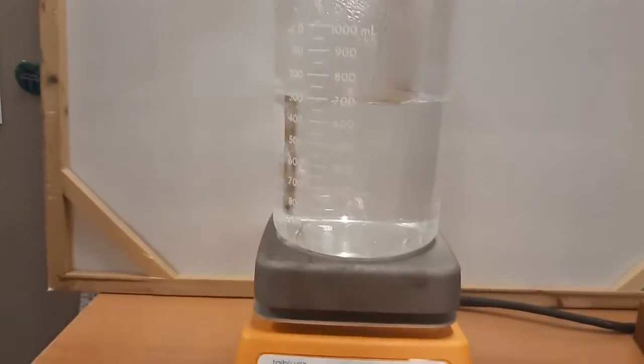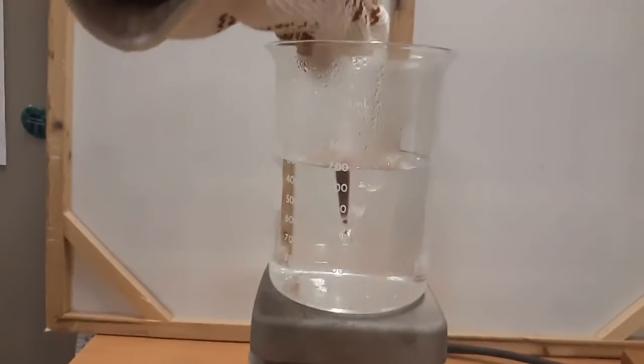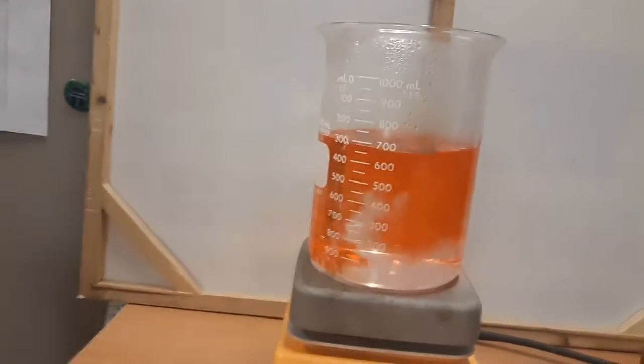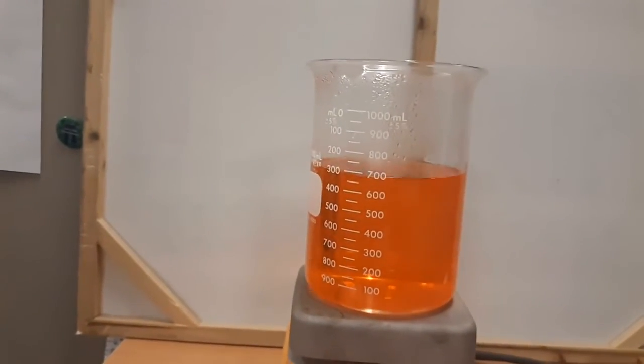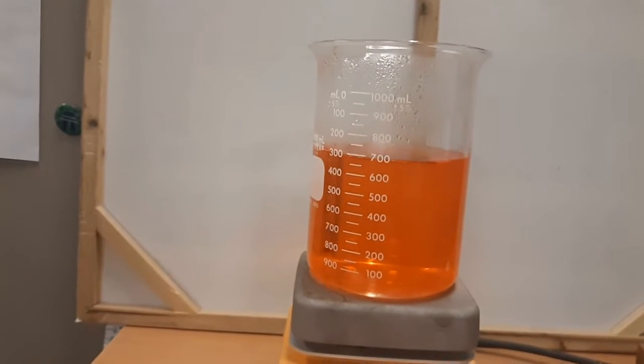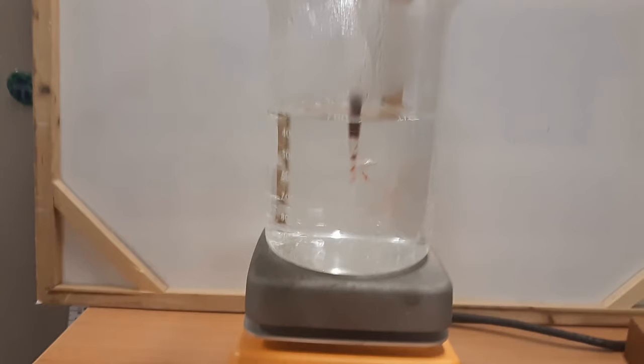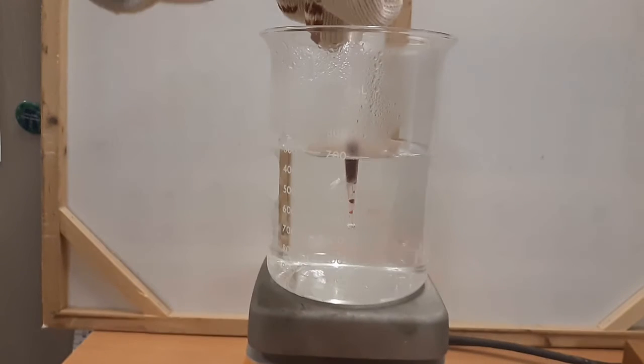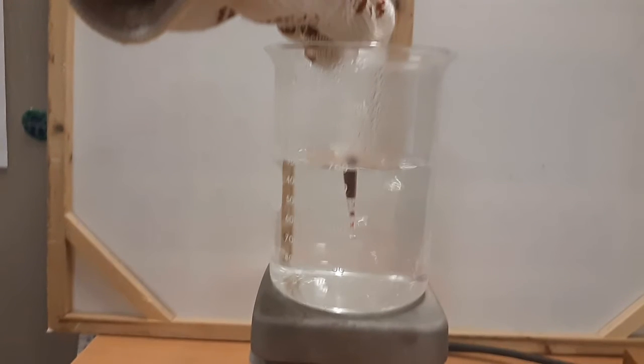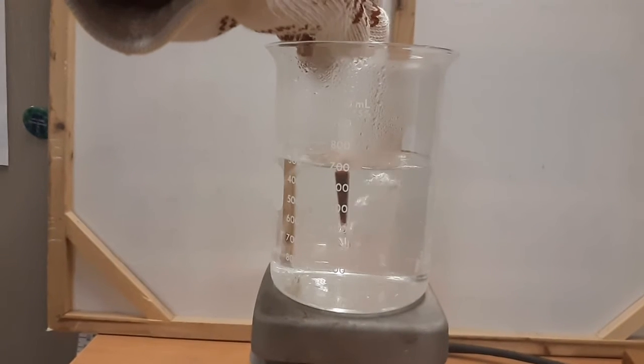Let's observe red food coloring being added to a beaker of boiling hot water. Be sure to take note of how the red moves throughout the water. Now let's watch it again in slow motion. As you squeeze the bulb of the pipette, it releases the red into the water.